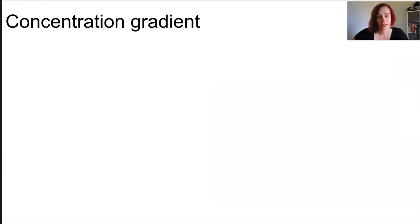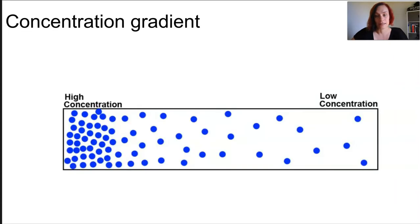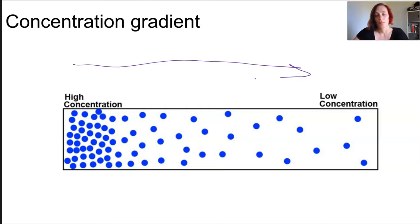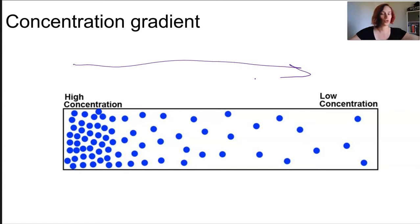Before we start, we need to understand what a concentration gradient is — it's about the distribution of particles across a space from high concentration to low concentration. Substances will always travel from an area of high concentration to low concentration. For example, if you spray perfume in one part of the room, the molecules will diffuse out from an area of high concentration and spread out to the area of low concentration.